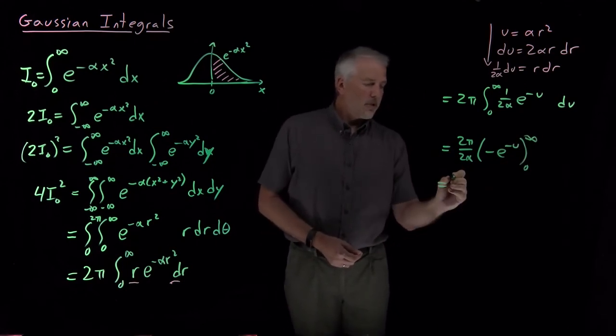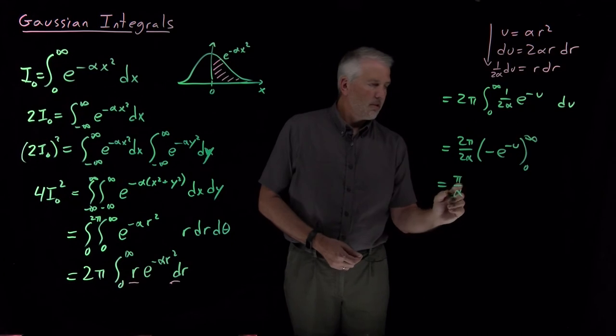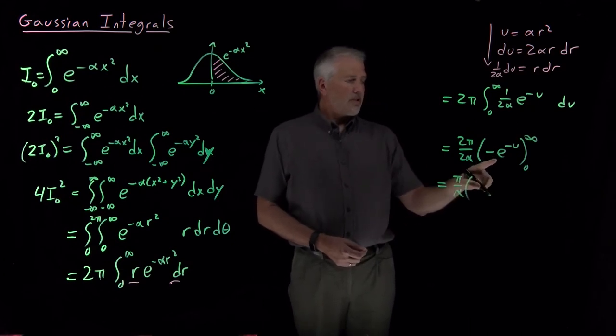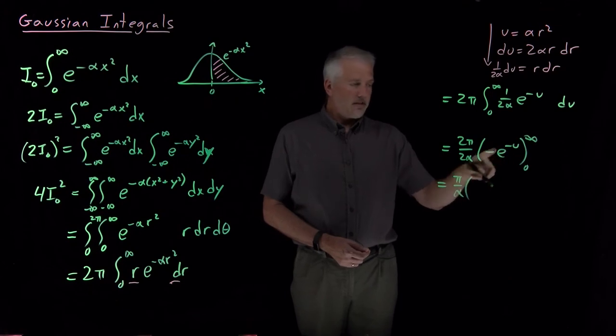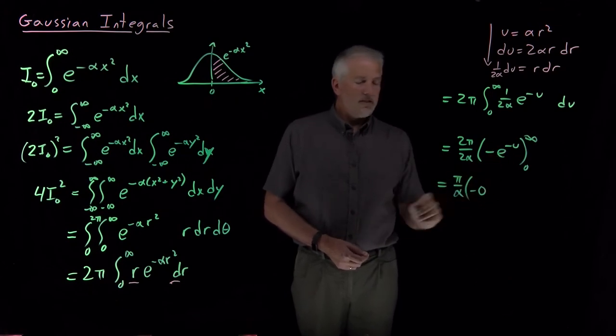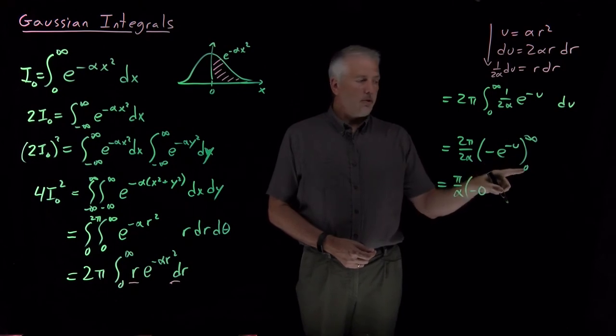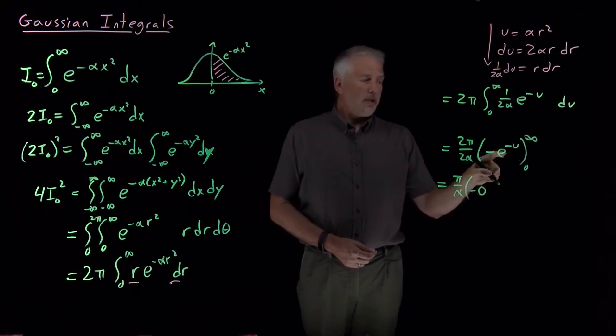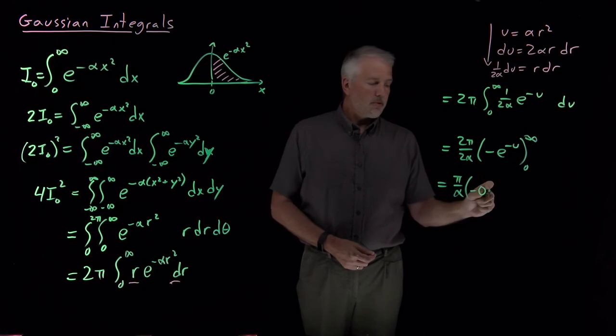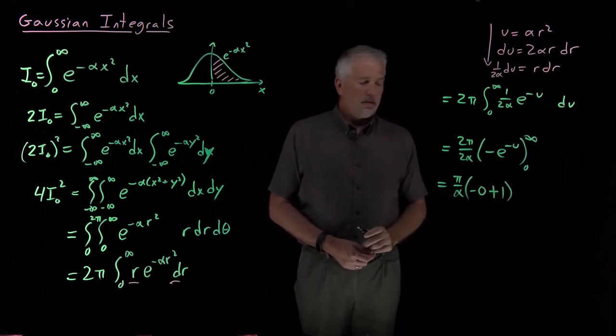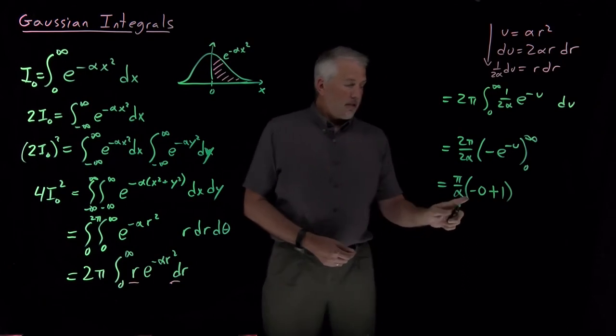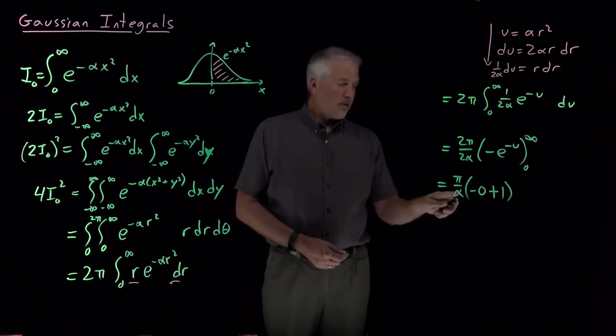My 2s cancel. The quantity in parentheses, I have e to the minus infinity and that's 0, so I've got a negative 0. And when I stick the 0 in for u, when u is equal to 0, e to the 0 is 1, so I'm subtracting a negative 1 and so I get pi over alpha.